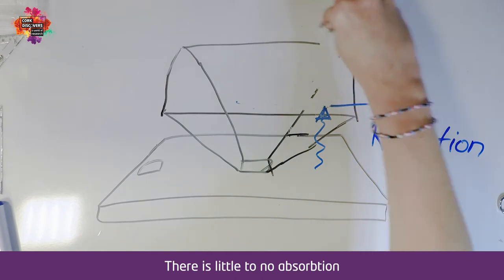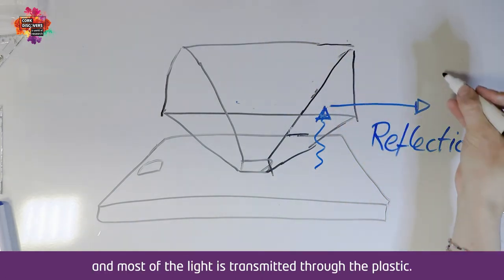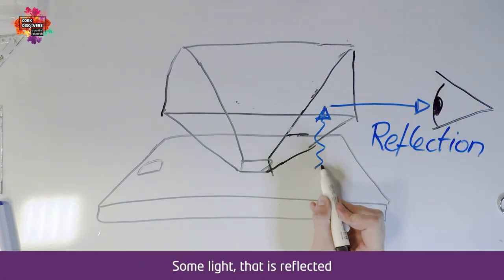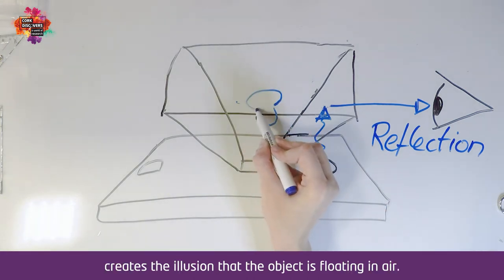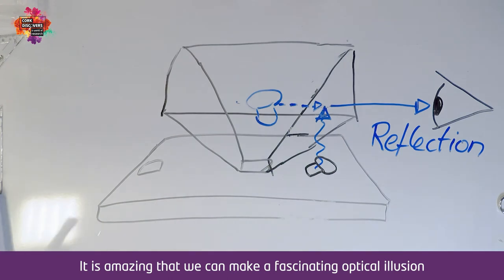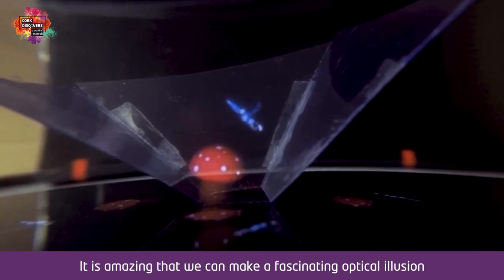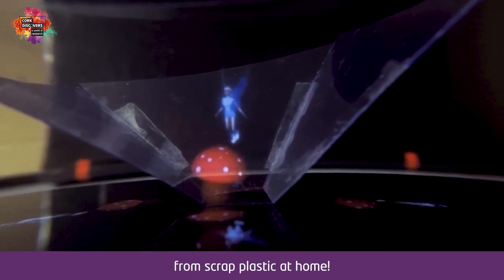there is little to no absorption and most of the light is transmitted to the plastic. Some light that is reflected creates the illusion that the object is floating in air. It is amazing that we can make a fascinating optical illusion in the form of a hologram from scrap plastic at home.